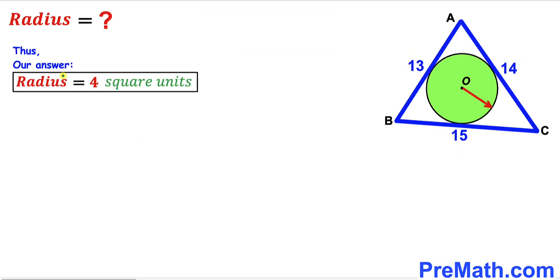So the radius of this green shaded circle turns out to be 4 units — that's our final answer. Thanks for watching, and please don't forget to subscribe to my channel for more exciting videos. Bye!